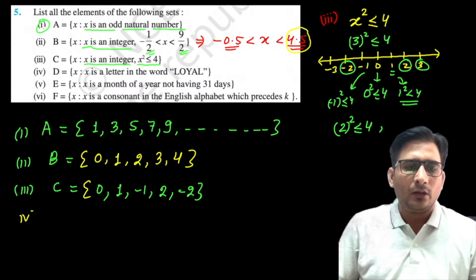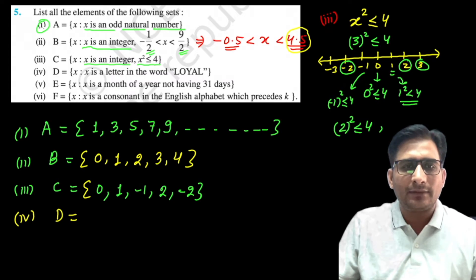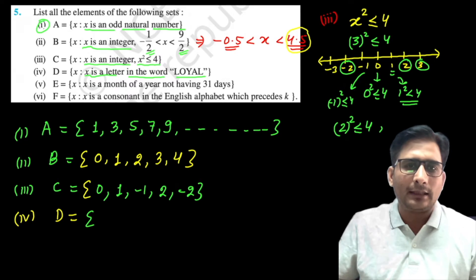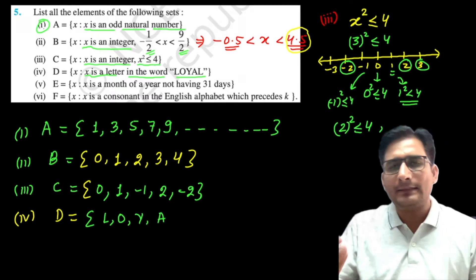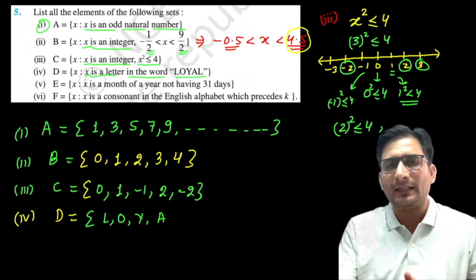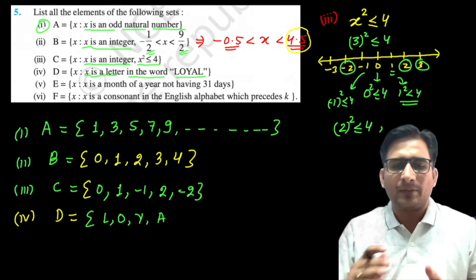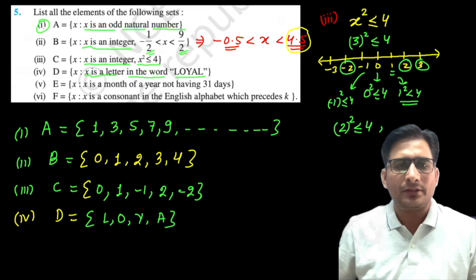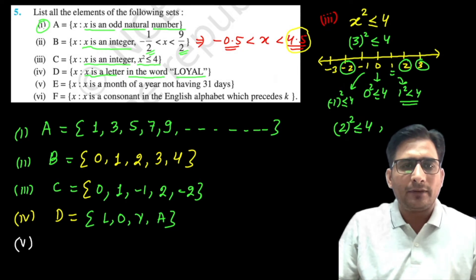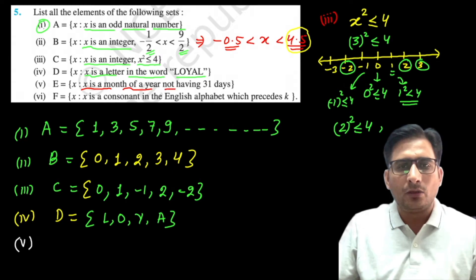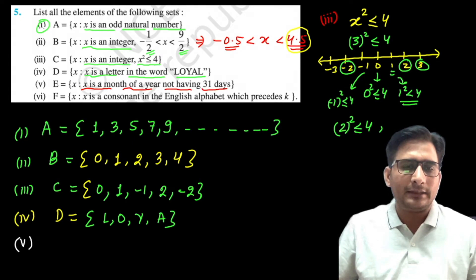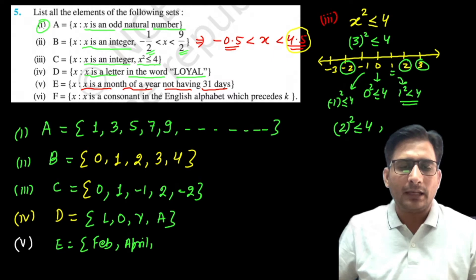Part four: x is a letter in the word 'LOYAL'. The letters are L, O, Y, A, L — but L repeats. As explained earlier, in a set we do not write repeated elements twice. So the roster form is {L, O, Y, A}. Part five: x is a month of the year not having 31 days. January has 31, so skip; February is included.